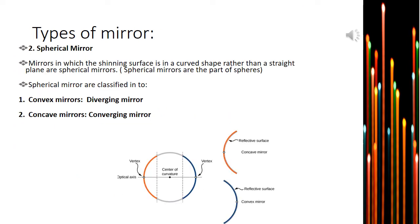Let's talk about the second type of mirror, that is the spherical mirror. Mirrors in which the shining surface is in a curved shape rather than a straight plain surface are spherical mirrors. Even polished and smooth curved surfaces can act as mirrors, and such mirrors are called curved mirrors or spherical mirrors. In short, a spherical mirror is one whose smooth and polished reflecting surface is curved.